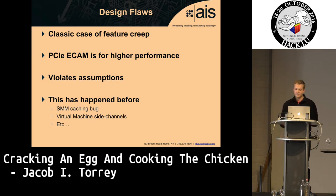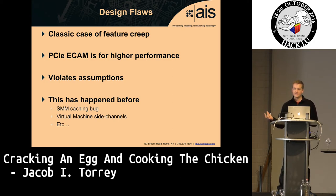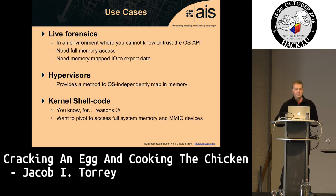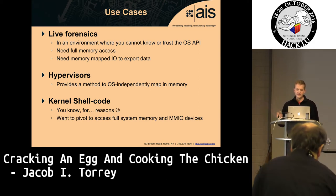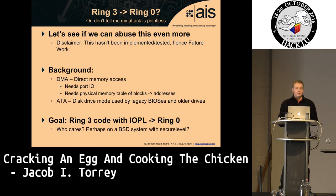Why does this work? Feature creep — they kept adding features without revisiting earlier assumptions. ECAM was added for higher performance, and platform manufacturers always want faster products without examining the impact on previous security assumptions. This happens repeatedly: the SMM caching bug, virtual machine side channels, etc. This technique enables live forensics — when you don't trust the OS API for memory access, need full memory access, or want kernel shellcode that can access full system memory and memory-mapped IO without any system calls that might be logged.